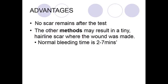The advantages of Duke's method is it doesn't leave any scar after the test, whereas other methods may result in a tiny hair line scar where the wound was made. And the normal bleeding time is 2 to 7 minutes.